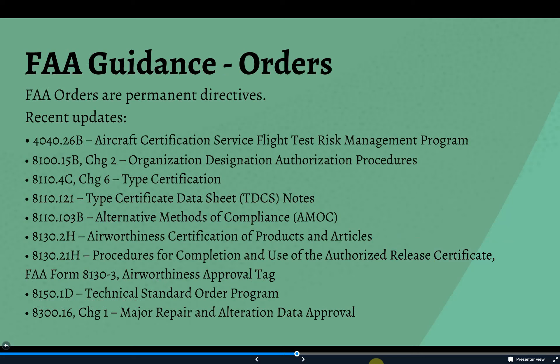At the top of the guidance hierarchy, FAA orders are permanent directives primarily focused on defining the agency's policies, organization, responsibilities, methods, and procedures. The ODA must follow the FAA orders fully, but the implementation may look a little different within the ODA because, in many cases, the procedures manual has captured the essence of the defined processes rather than the explicit details they may provide.